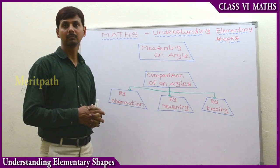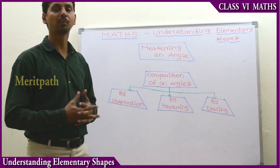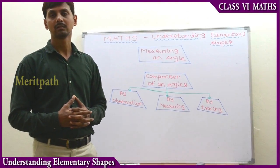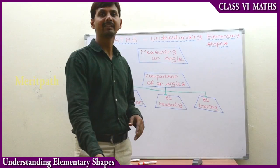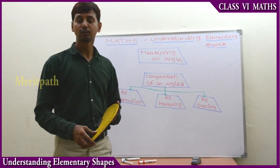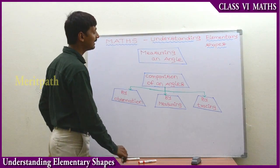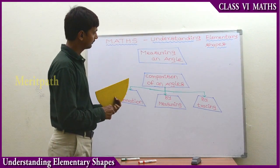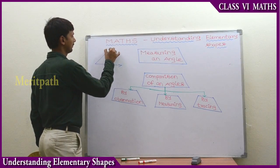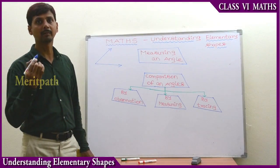Measuring an angle. So let us discuss how to measure an angle. Visually we use the protractor to measure an angle. An angle is the joining of two rays having a common point.